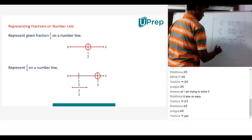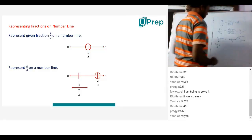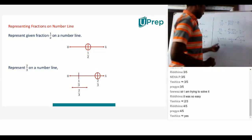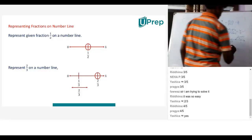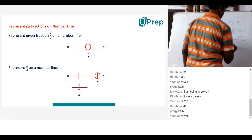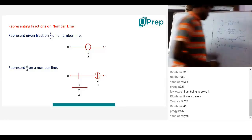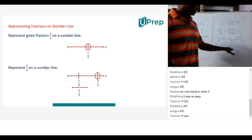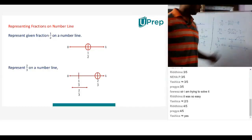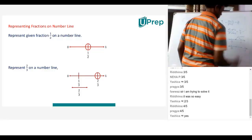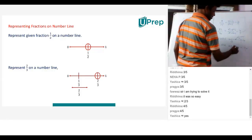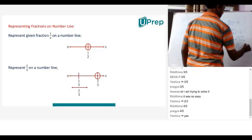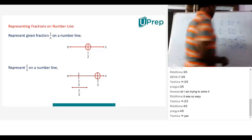Now if I have 2 by 3 — 2 by 3 is approximately 0.66 something, so 2 by 3 is again between 0 and 1. Because I have 3 parts here, I divide the gap between 0 and 1 into 3 equal parts. So if this is 0, this will be 1 by 3, this is 2 by 3, and this is what we want.